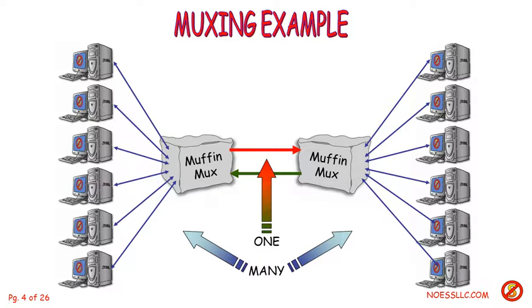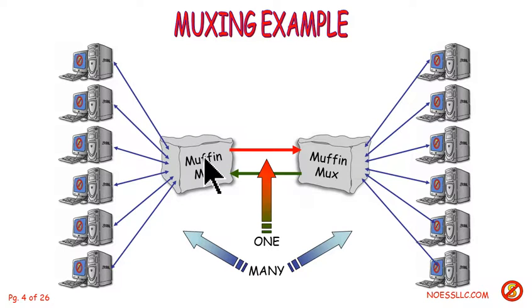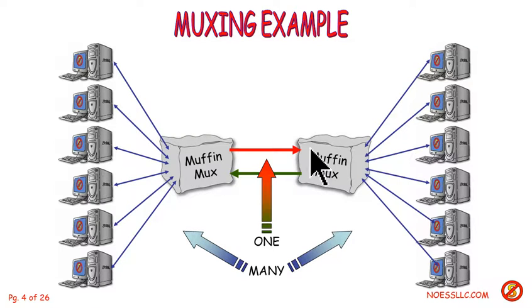What are we really doing in multiplexing? We're putting a whole bunch of customers on a limited transmission facility. We don't need a separate transmission facility for each one — we can combine them together, otherwise known as multiplexing. So I can put all these people through this muffin multiplexer and send them out on one fiber, one cable, or one piece of twisted pair. Then of course the other side wants to respond back.